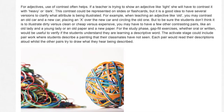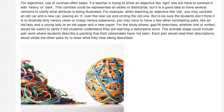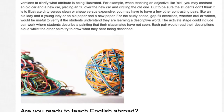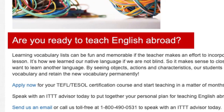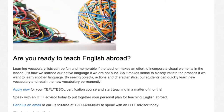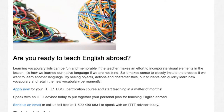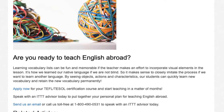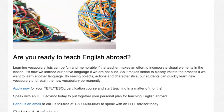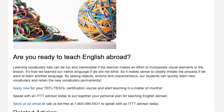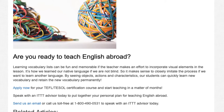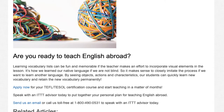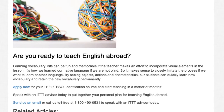The activate stage could include pair work where students describe a painting their classmates have not seen. Each pair would read their descriptions aloud whilst the other pairs try to draw what they hear. Learning vocabulary lists can be fun and memorable if the teacher incorporates visual elements. It's how we learned our native language, so it makes sense to imitate that process. By seeing objects, actions, and characteristics, students can quickly learn and permanently retain new vocabulary.